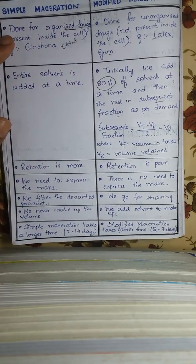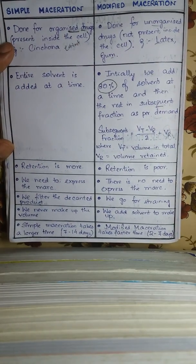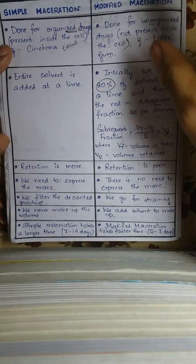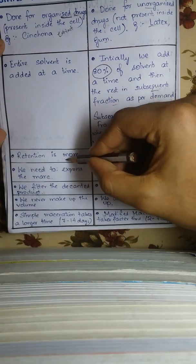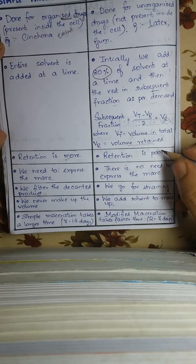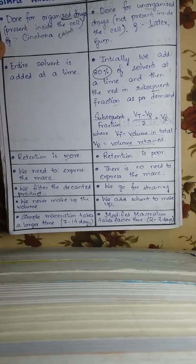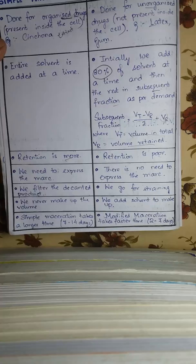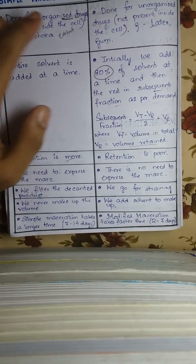This procedure is followed in modified maceration because the drug quantity is very large and needs to be washed. In simple maceration, retention is more because it is done for organized drugs — the active constituents are present inside the cell, making it harder to extract.